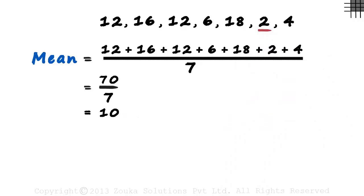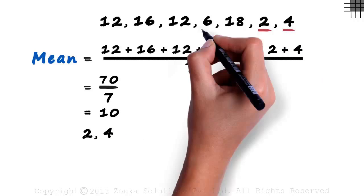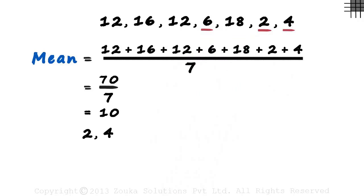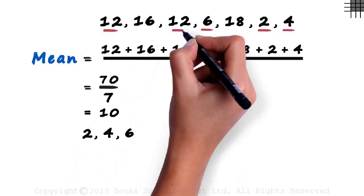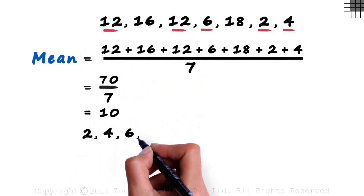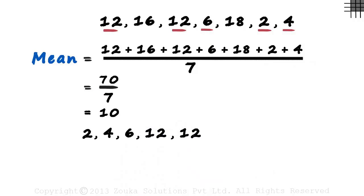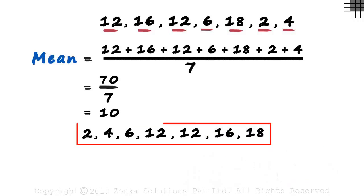2, as we can see, is the least number. We write a 2 first. The next higher number is 4. We write a 4 next. Then 6. It is always a good idea to mark the numbers you have written with a pencil. If the list is huge, there is a chance that you might miss out a few numbers. So 6 would come next. The next highest number after 6 is 12 and it occurs twice, so we write 12 and 12 here. Then 16, then 18. We write 16 and 18 and that completes our list. Make sure you have covered all values.